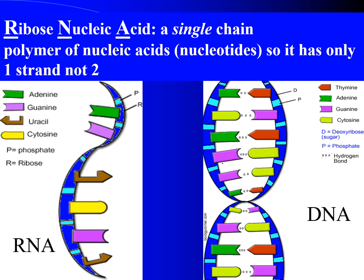Now let's talk about DNA's slightly peculiar cousin, RNA. RNA stands for ribose nucleic acid. The R in RNA stands for ribose, which is a different type of sugar. With DNA you had deoxyribose; with RNA you just have ribose — a different sugar for this backbone chain. RNA is a single-sided chain, so there's no double helix like you see with DNA. That's another difference. It's still made of nucleotides — the same type of monomers — but the big difference in shape is that it's single-stranded, not double-stranded.